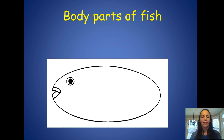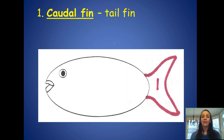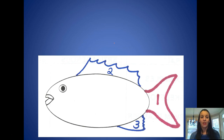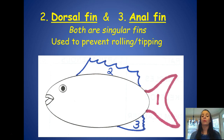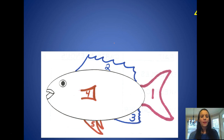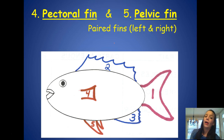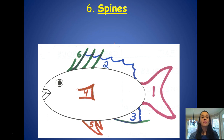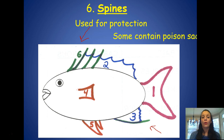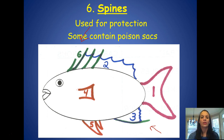Starting with a basic fish shape, the caudal fin (tail fin) is used for forward motion and acceleration. The dorsal fin on top and the anal fin on the bottom are singular, unpaired fins that prevent rolling and tipping while swimming. The pectoral fin and pelvic fin are paired fins — with a left and right each — used for balance, stopping, and turning. Spines, four on top and one on the bottom, are used for protection and some contain poison sacs.